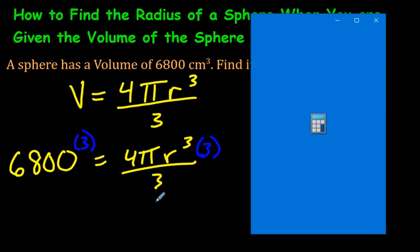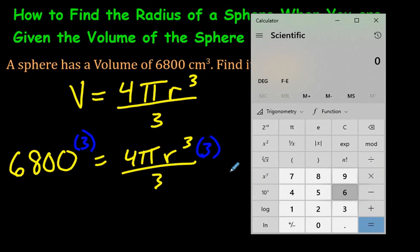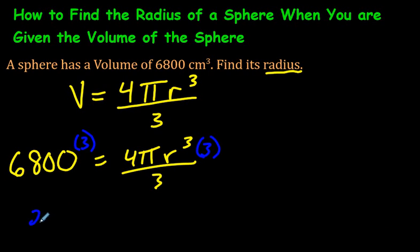So you take your trusty Windows calculator, or whatever calculator you have, if you have a Mac or a cell phone, and multiply that by 3. 20,400. So 20,400, and these 3's cancelled. 3 divided by 3 is just 1. That's why we multiplied by 3. We were getting rid of this 3 here.